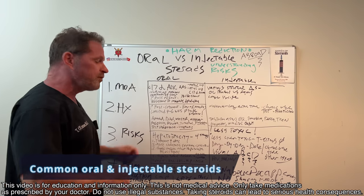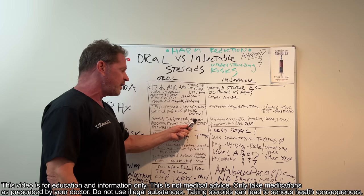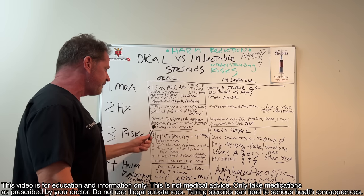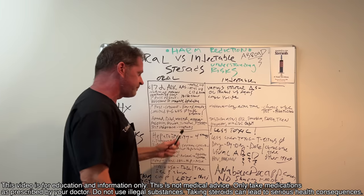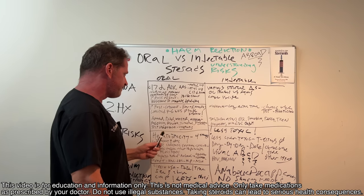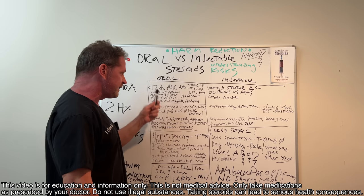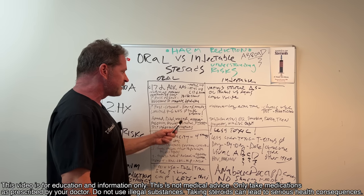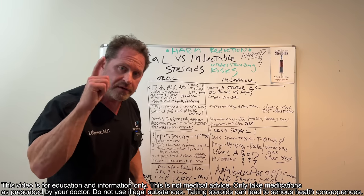So here are the drugs. Oral steroids first. Anadrol, Dianabol, Winstrol, Anavar, Halotestin, Proviron. Primobolan is on both sides, both oral and injectable. And testosterone undecanoate, which is very special. It is oral, but it runs through the lymphatics. It's not the 17-alpha-alkylated deal. It's not hepatotoxic. Guys, pay attention to that.